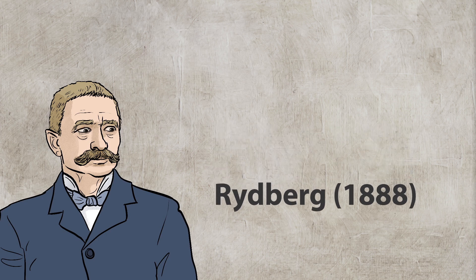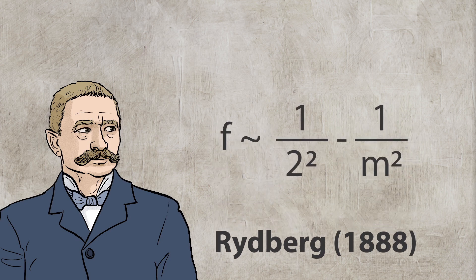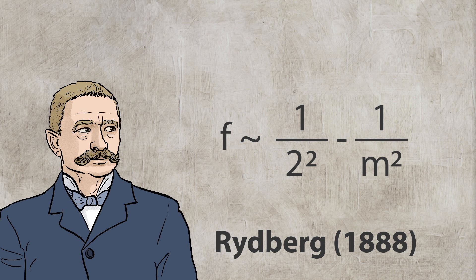Rydberg rewrote Balmer's formula as a difference between 1 divided by 2 squared minus 1 divided by m squared. This means that Rydberg assigned two natural numbers to each frequency.